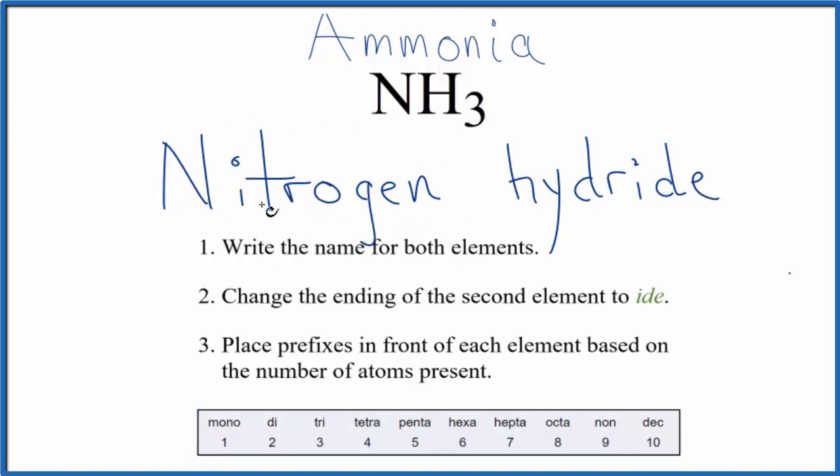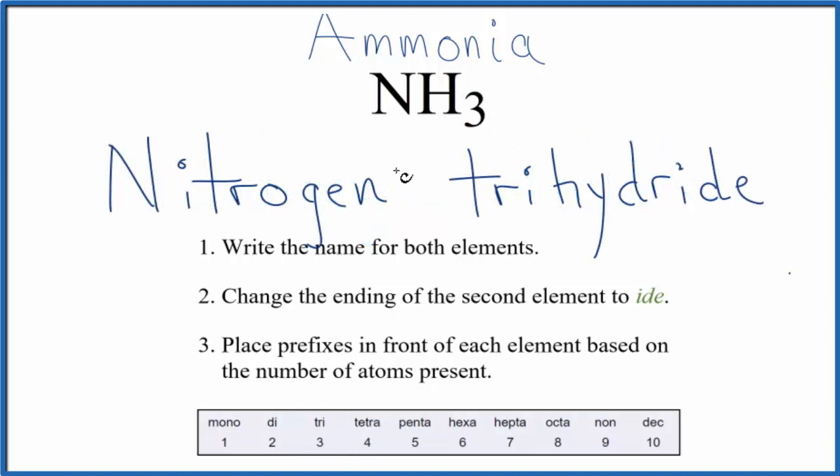For the hydride, for the hydrogen, we have three of those, so we're gonna write tri in front of the hydride. So the name for NH3 is nitrogen trihydride - you have three hydrogen atoms, and just because we have nitrogen by itself, we only have one.